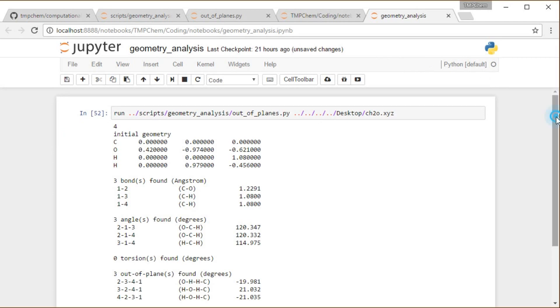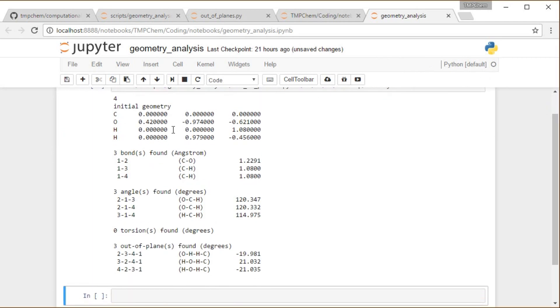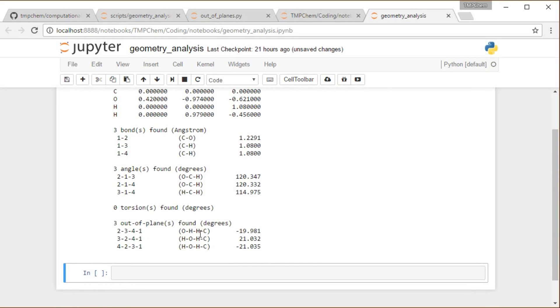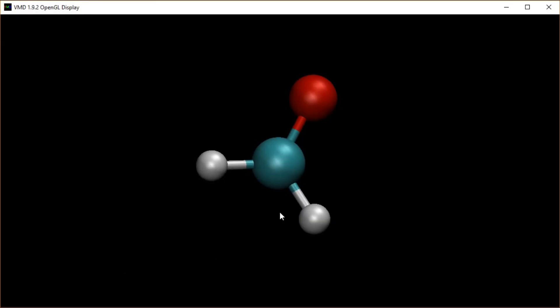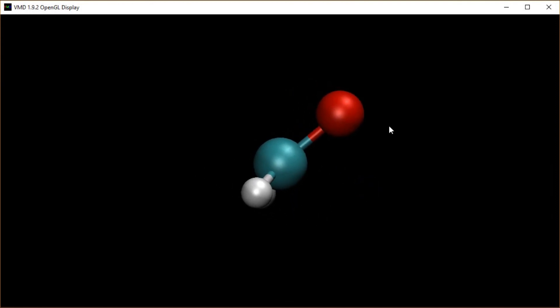So that worked. Initially we have, it gives me my XYZ file back that I gave it. Says it found three bonds. There's the bond lengths. Three bond angles. There are the bond angles in degrees. No torsions. That's consistent with what we've been showing. And then the out-of-plane angles. It gave some extra ones, but I believe the one we were interested in was this OHHC. I said about 20 degrees, 15 degrees is about the order of magnitude of this oscillation that's occurring there. So that is the basics of out-of-plane angles.